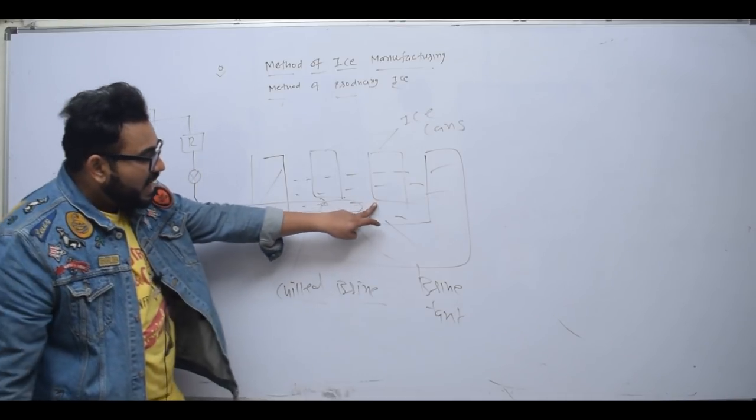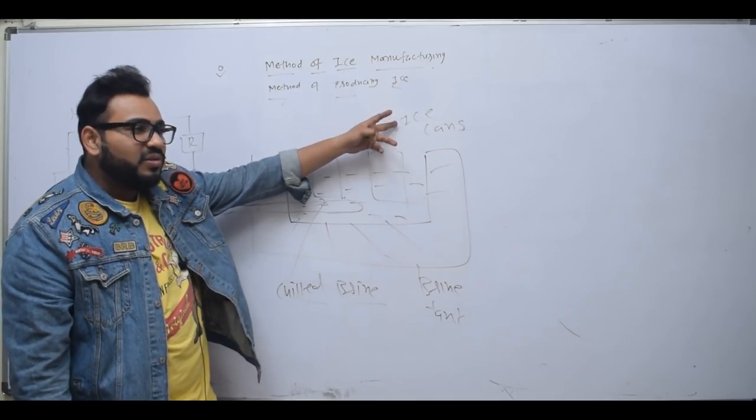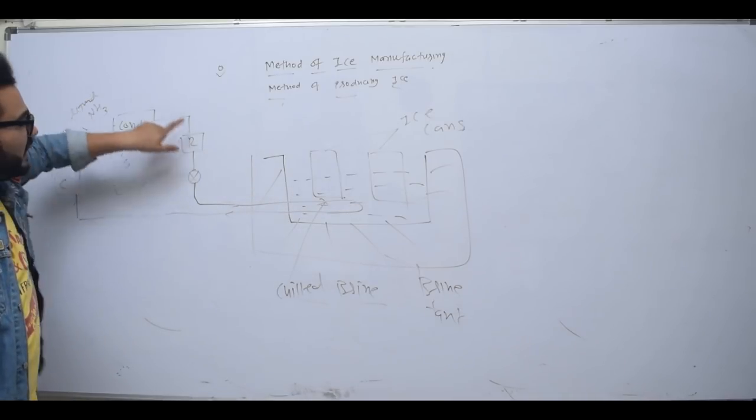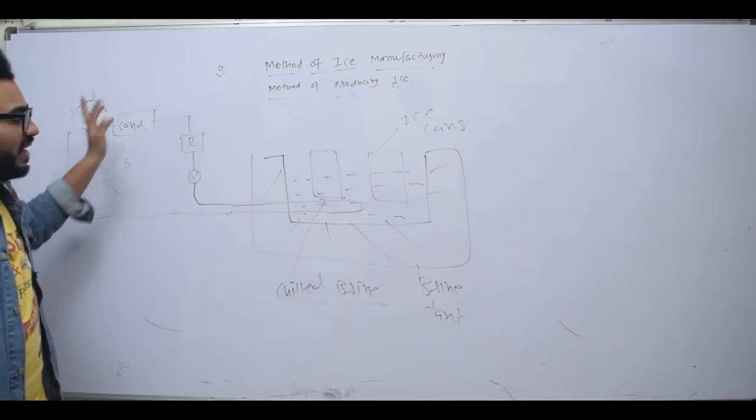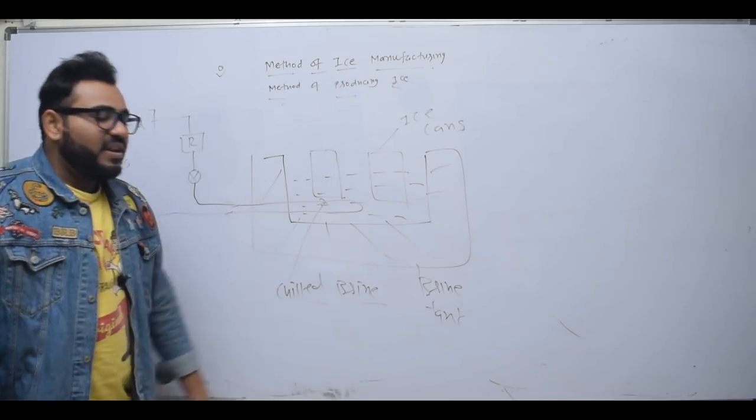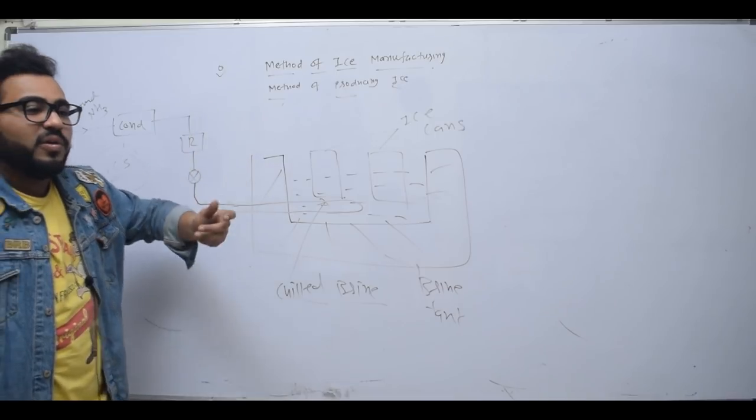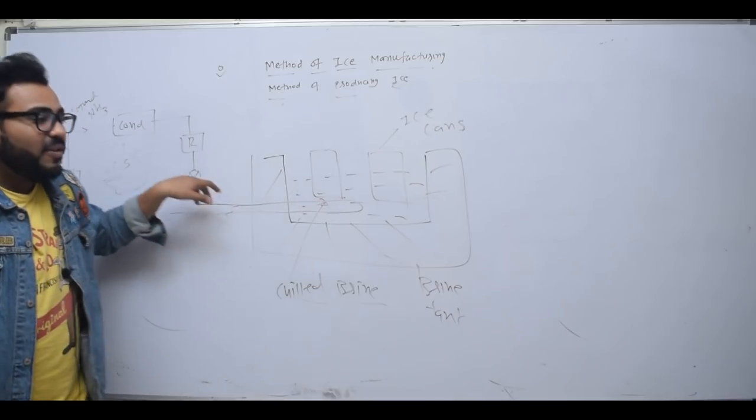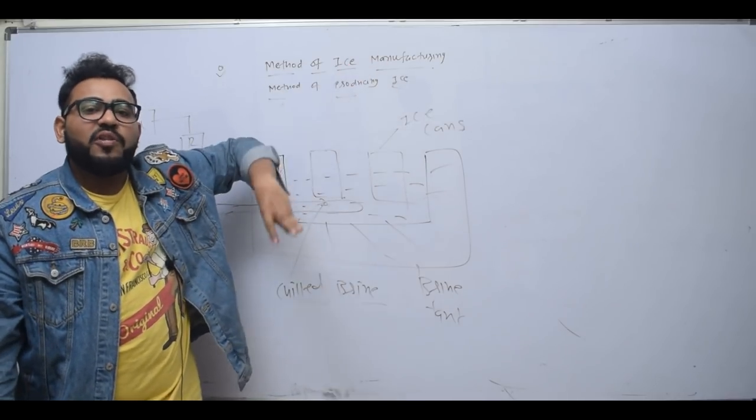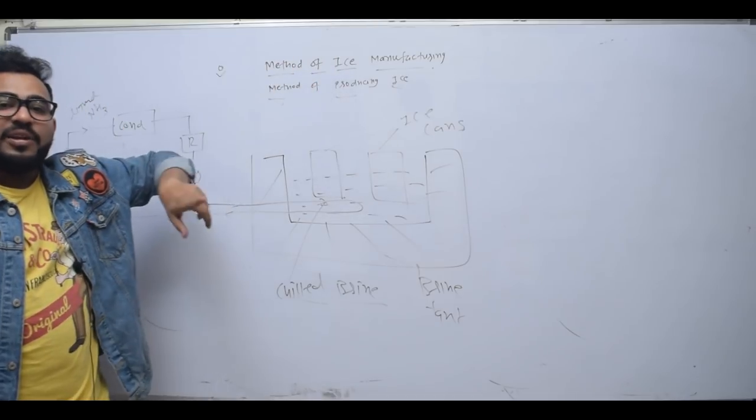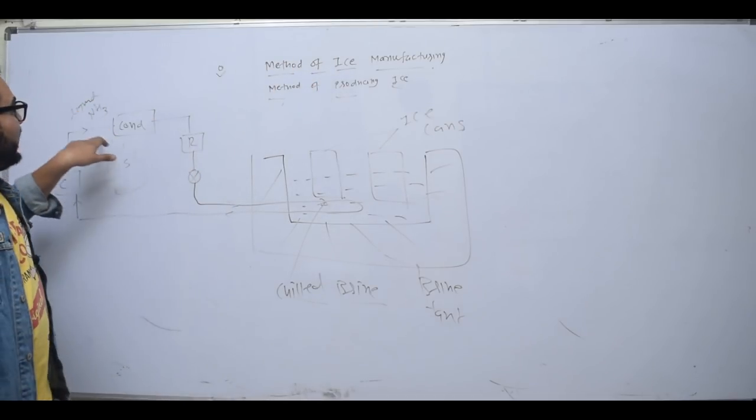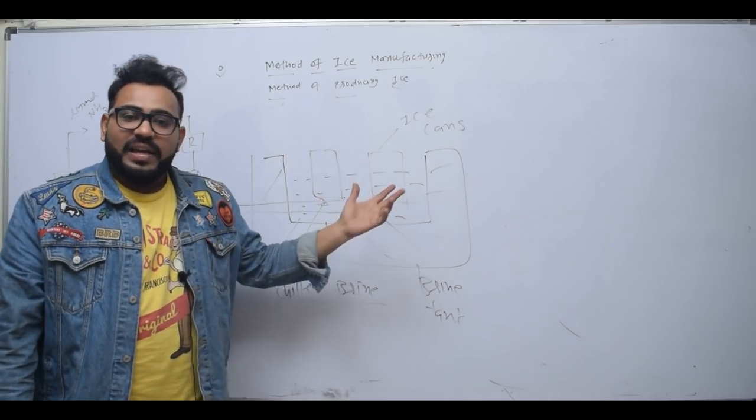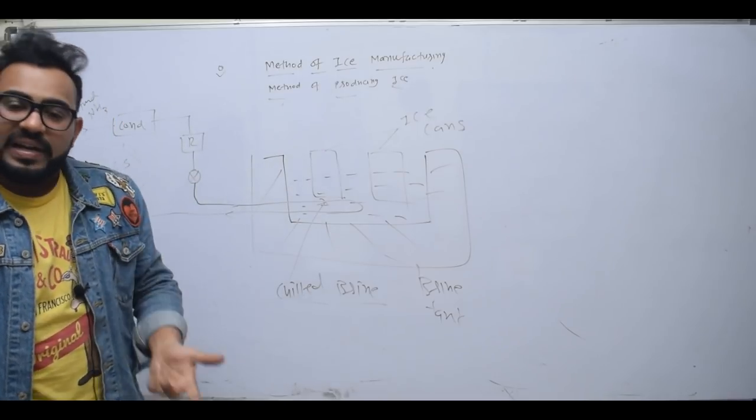The brine absorbs heat from water and converts it to ice. For the brine, we use ammonia refrigerant in a vapor compression system. Ammonia is the primary refrigerant that first cools the brine. The brine cannot provide direct cooling, so it needs to be cooled first by ammonia. This is why brine is called the secondary refrigerant.